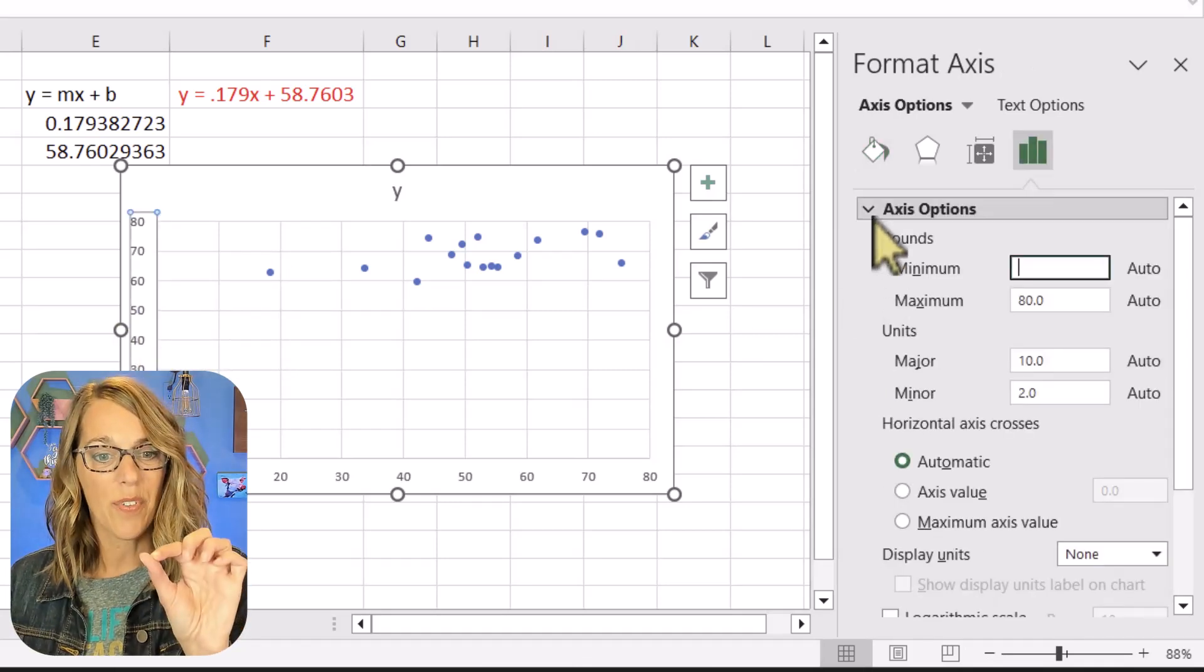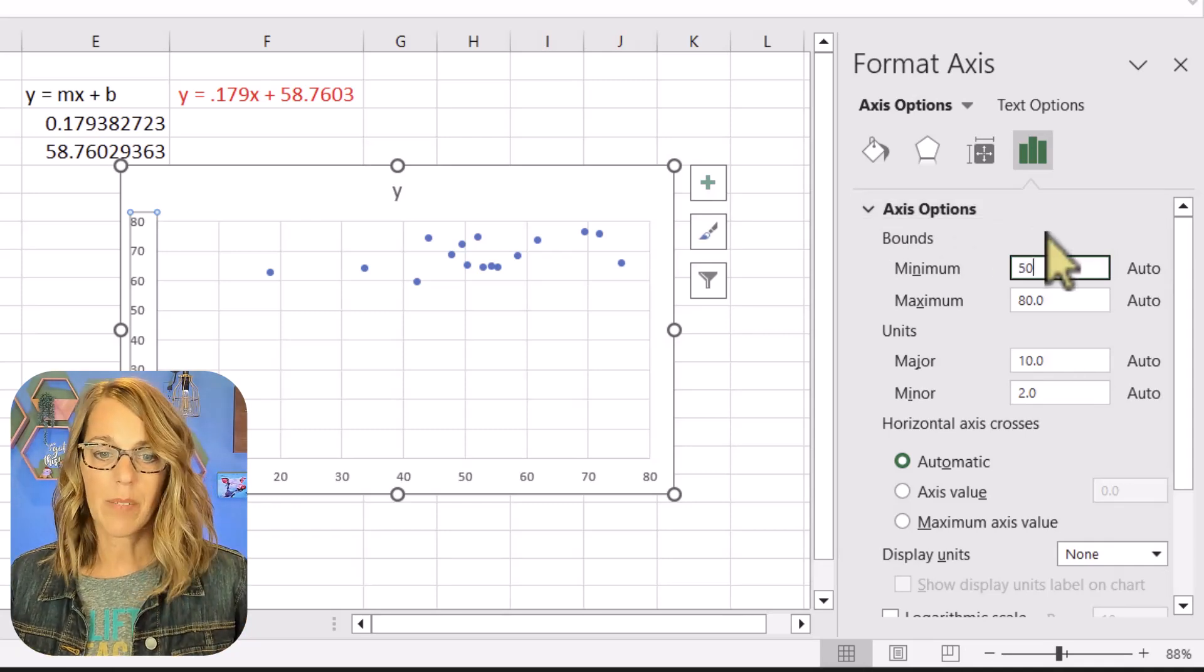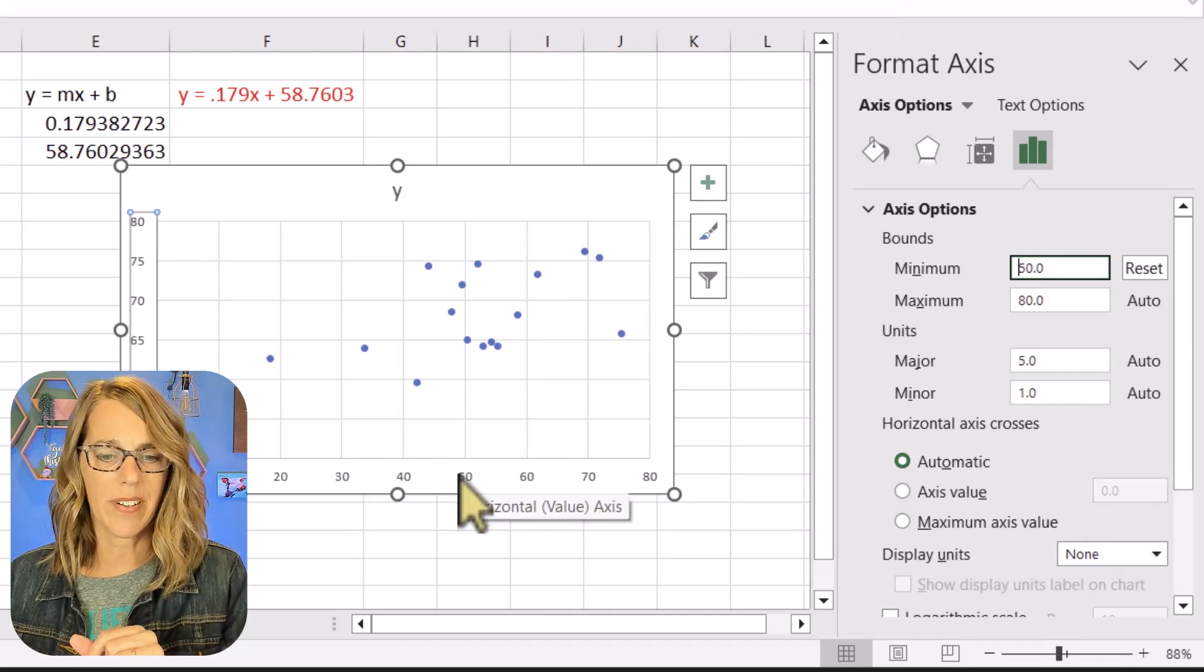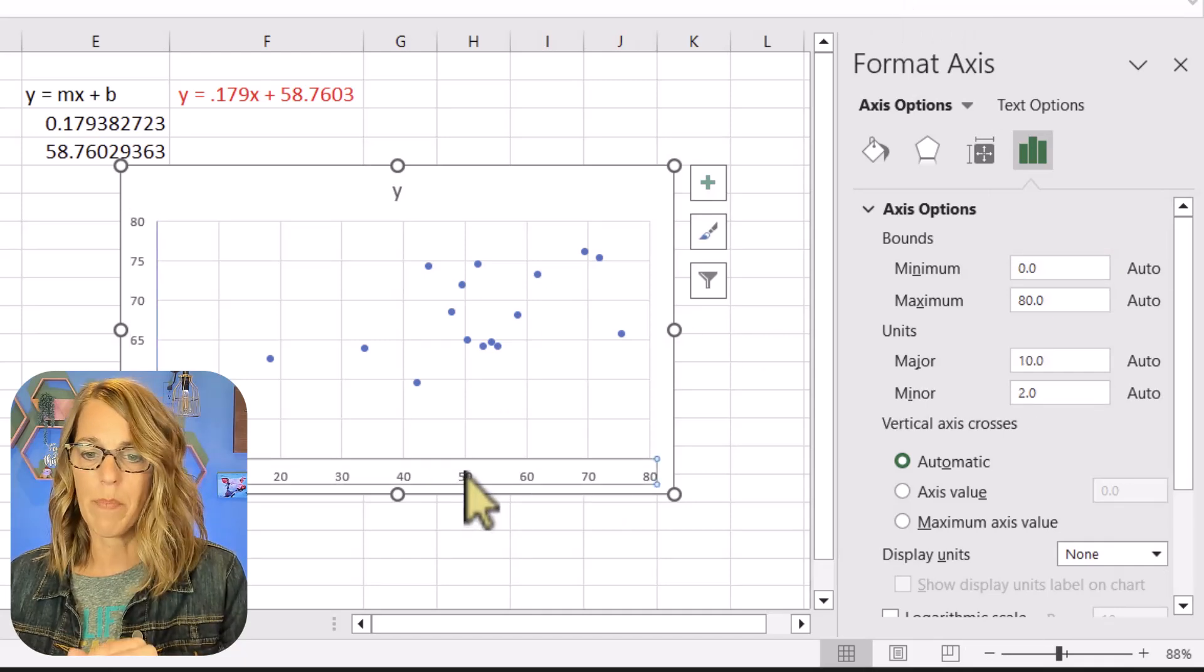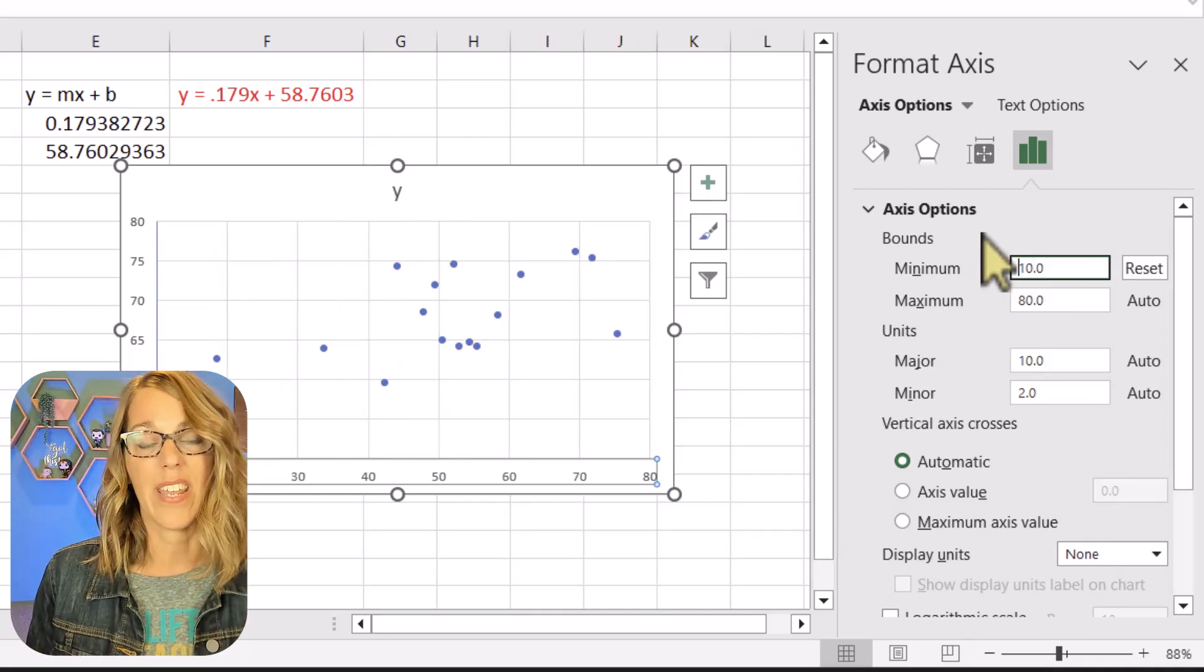Now I clicked on that y axis. So for the y's I really want the minimum to be more like 50 and the maximum of 80 is fine. So I'm going to go ahead and do that and then let's double click on the x's as well. They're not as bad but I want to change that minimum to be a 10. So just double clicking on it and then I'm going to do a 10 right there.